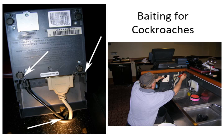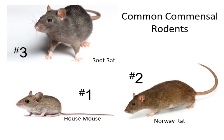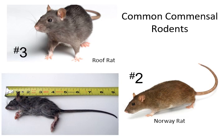Now switching to rodents. There are three rodents we commonly see around structures in North Carolina: the house mouse, the Norway rat, and the roof rat. The house mouse is small. The Norway rat is more robust or beefier, while the roof rat is more slender with a pointed nose — as you can see in this picture on the left. The Norway rat has a more blunt nose.